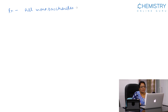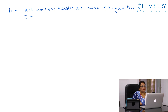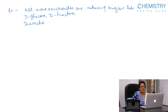Hemiacetals are reducing sugars, like D-glucose and D-fructose, and disaccharides like maltose and lactose.